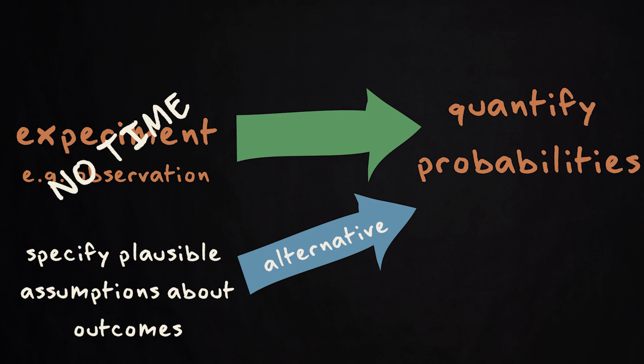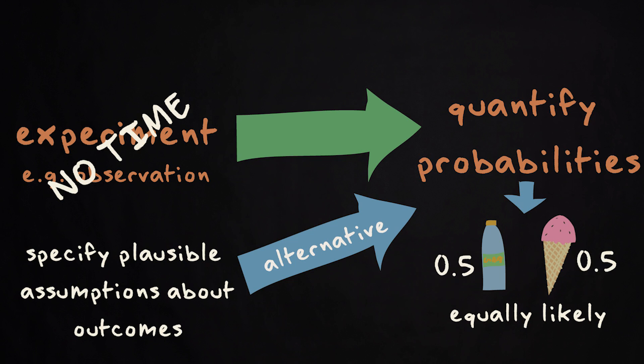You are going to assume that both outcomes for each elementary event are equally likely, and assign a probability of 0.5 for choosing either ice cream or soft drink by each customer.